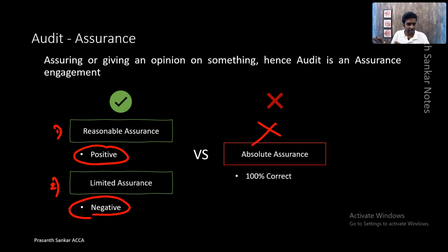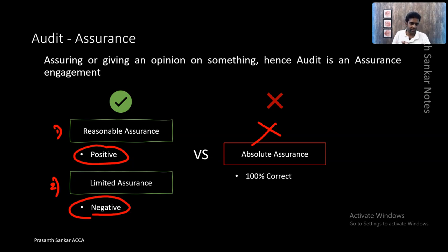We cannot say it's bad, but we cannot say everything is good either. Positive assurance or reasonable assurance is equal to saying it's good — we have collected the evidence and it's good. But absolute assurance is where we are saying it's perfect. It's never perfect for a practitioner, specifically in financial statements. The moment you say perfect, you are giving absolute assurance and taking absolute responsibility for the subject matter.